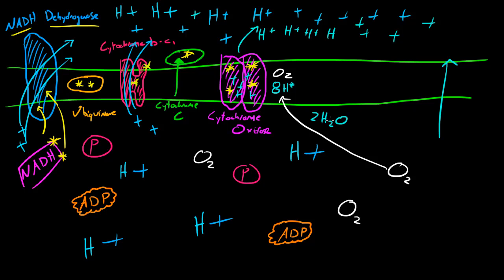Now, the potential energy of this gradient is going to be used by this last molecule. This last molecule is called ATP synthase. And let me go ahead and draw it. So ATP synthase is pretty much going to look something like this. It kind of looks like a weird-looking robot jellyfish.